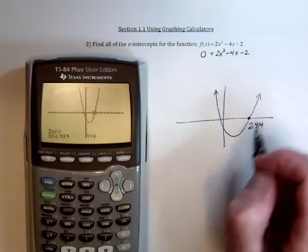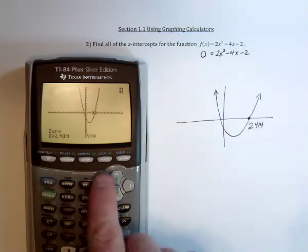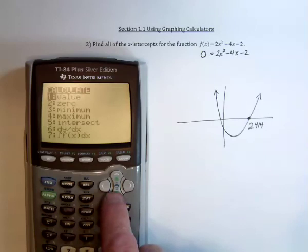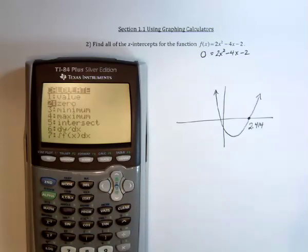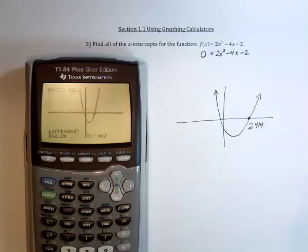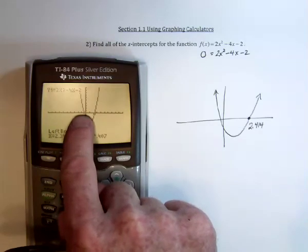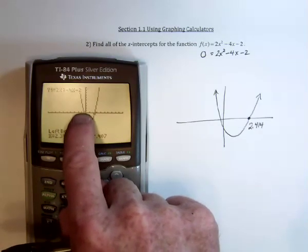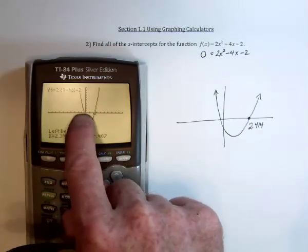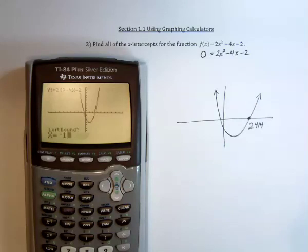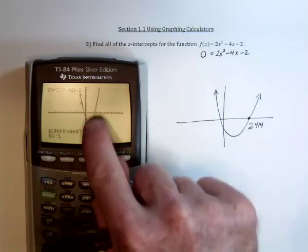And now to find the other one. So we'll go back to second, calculate, and number 2, the 0. And over here, to the left, so I think this value is at negative 0.5. To the left of it would be negative 1, so start on the left, negative 1. On the right-hand side would be 0.